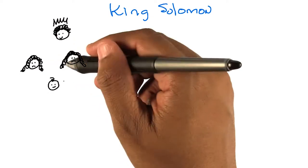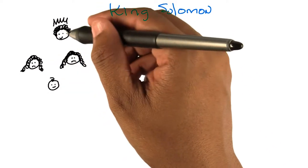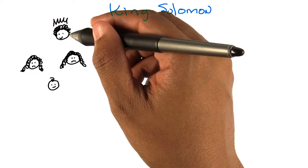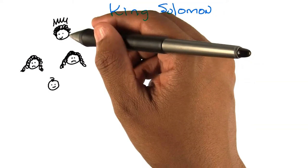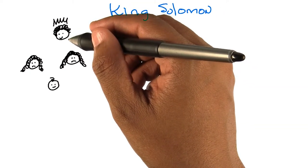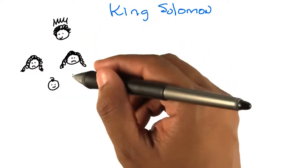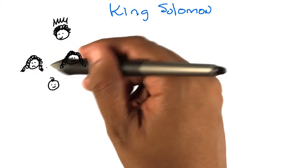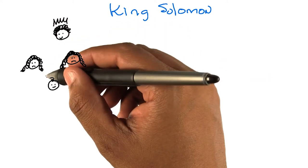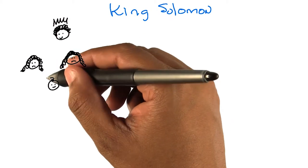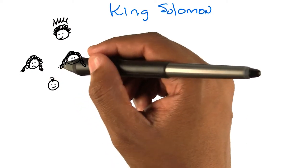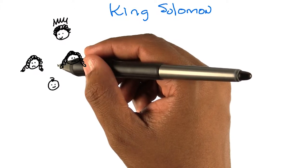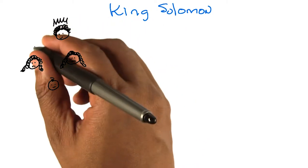So tell me the story of King Solomon and the two women and the baby. So once upon a time, King Solomon was hanging around on his throne doing kingly things, and he would answer questions for the various people in the country that he ruled — Judah, maybe? Sure, let's go with that. But he was known for being very wise, so people would come to him with very difficult problems. One of the difficult problems was two women came to him with a baby, and each of the women claimed that the baby was hers.